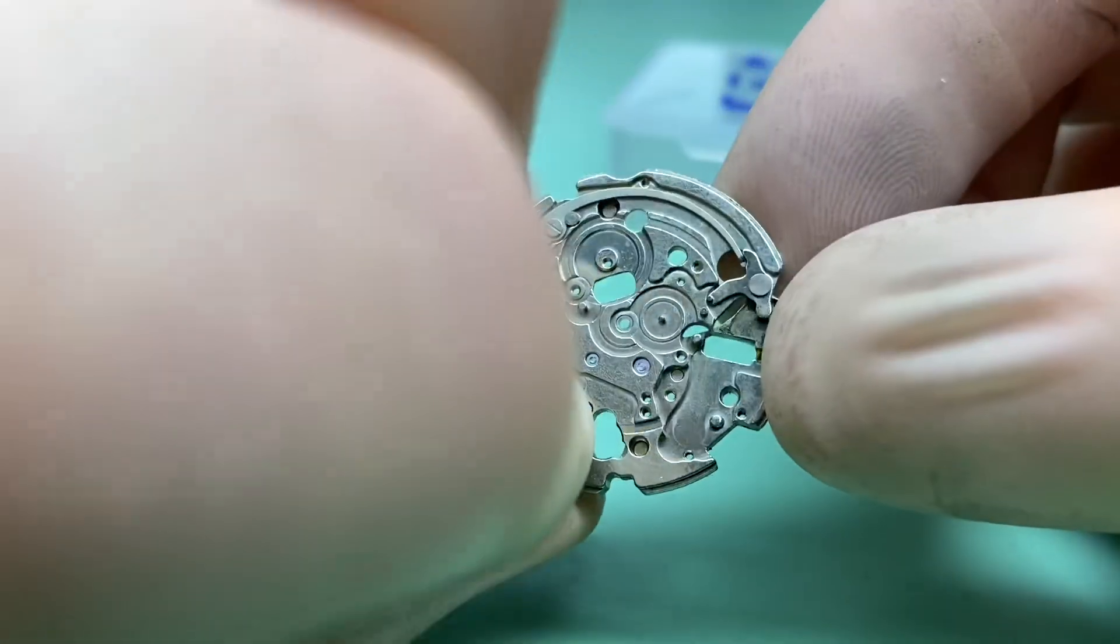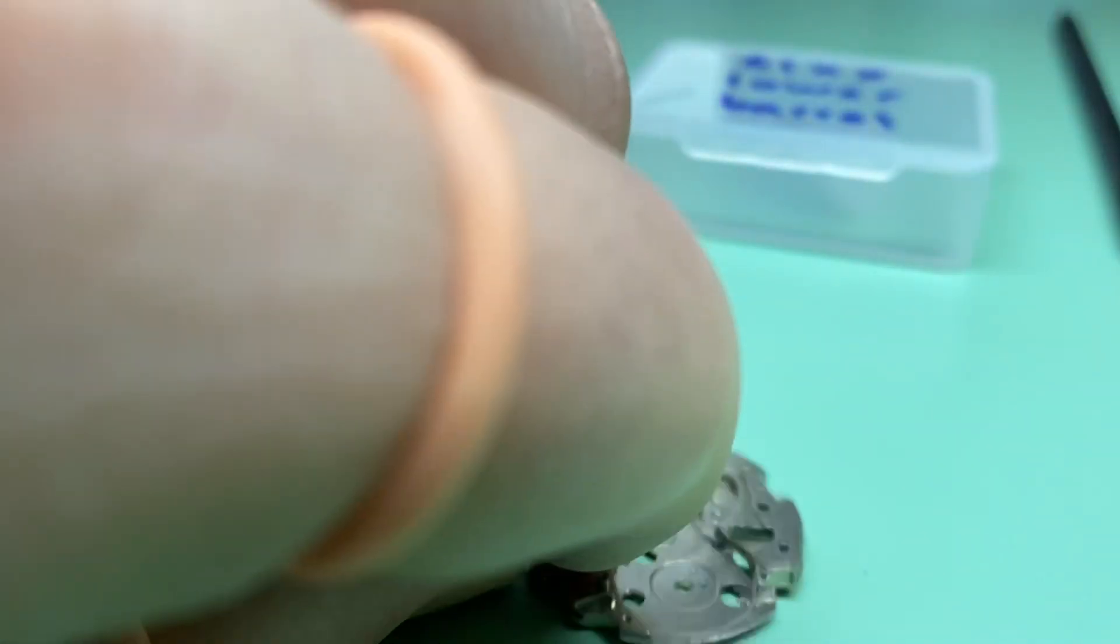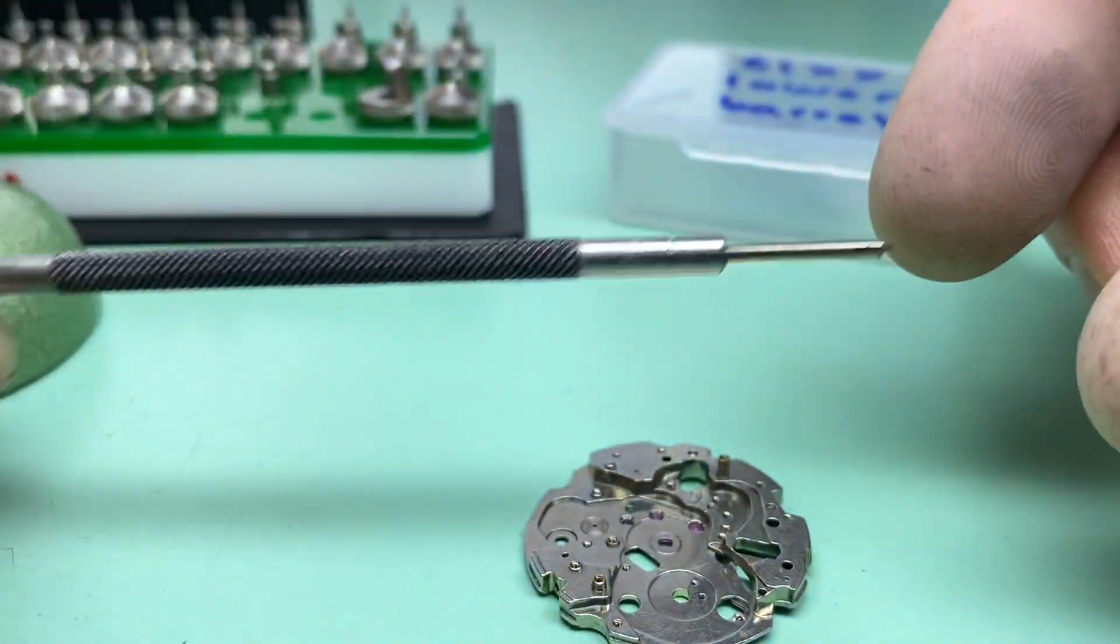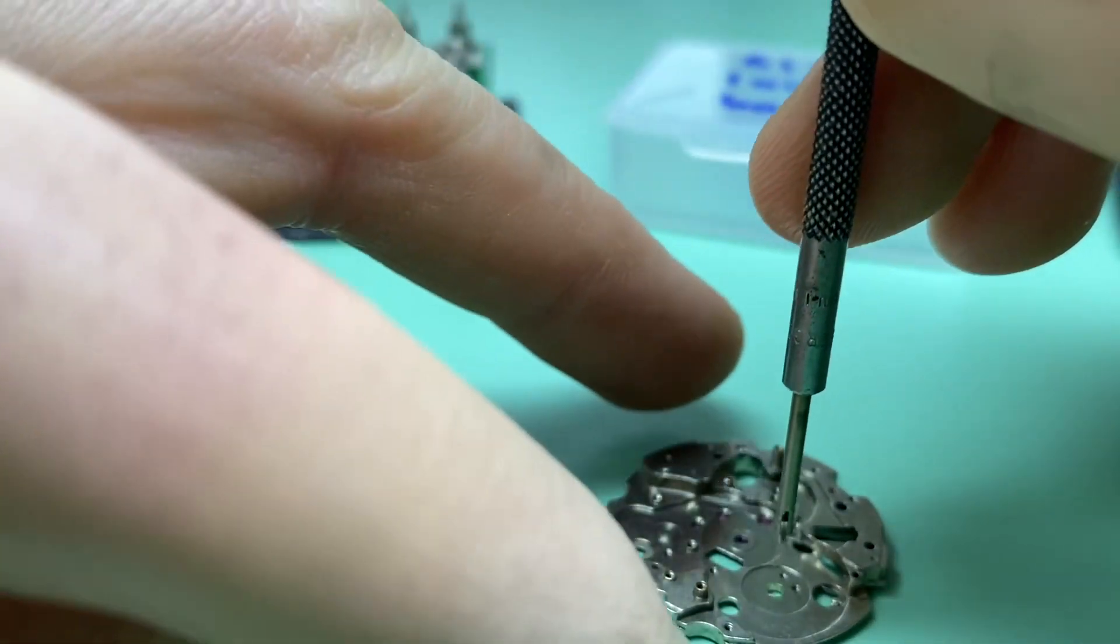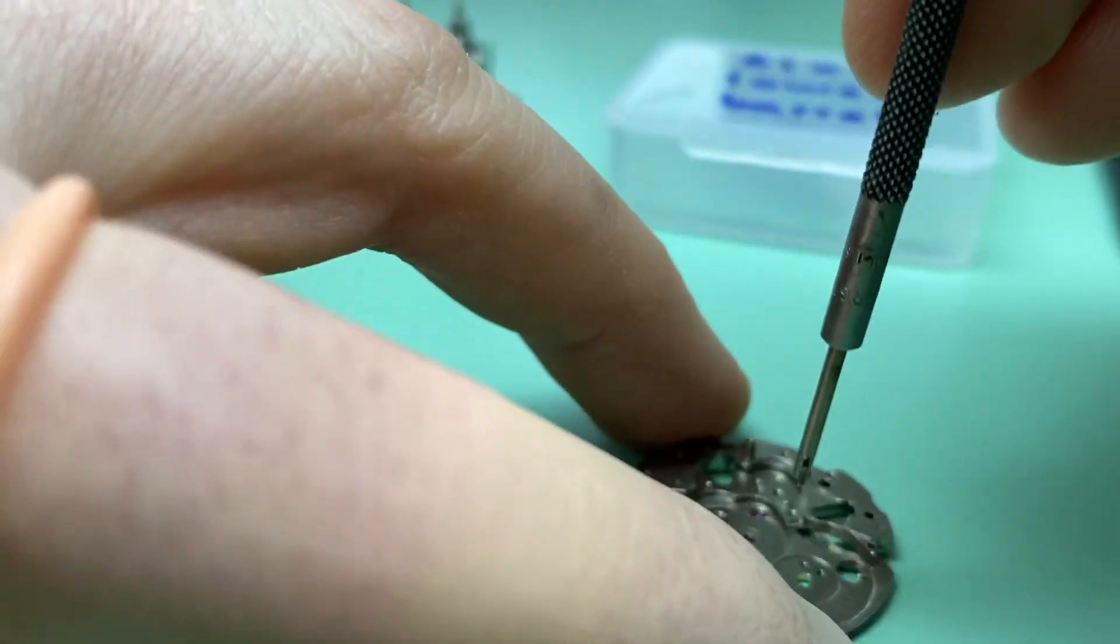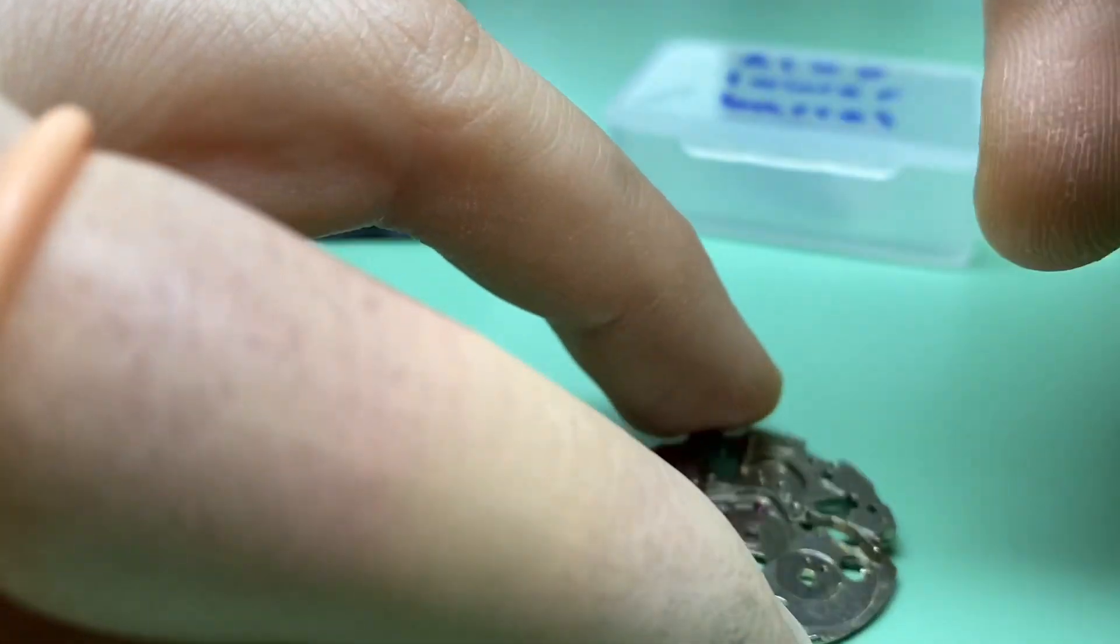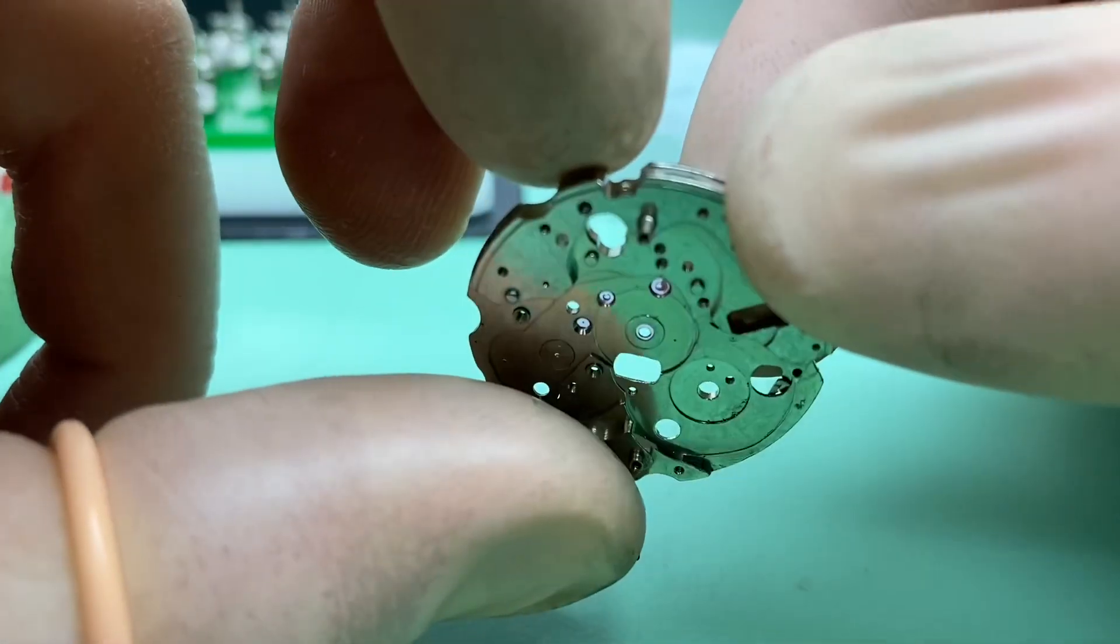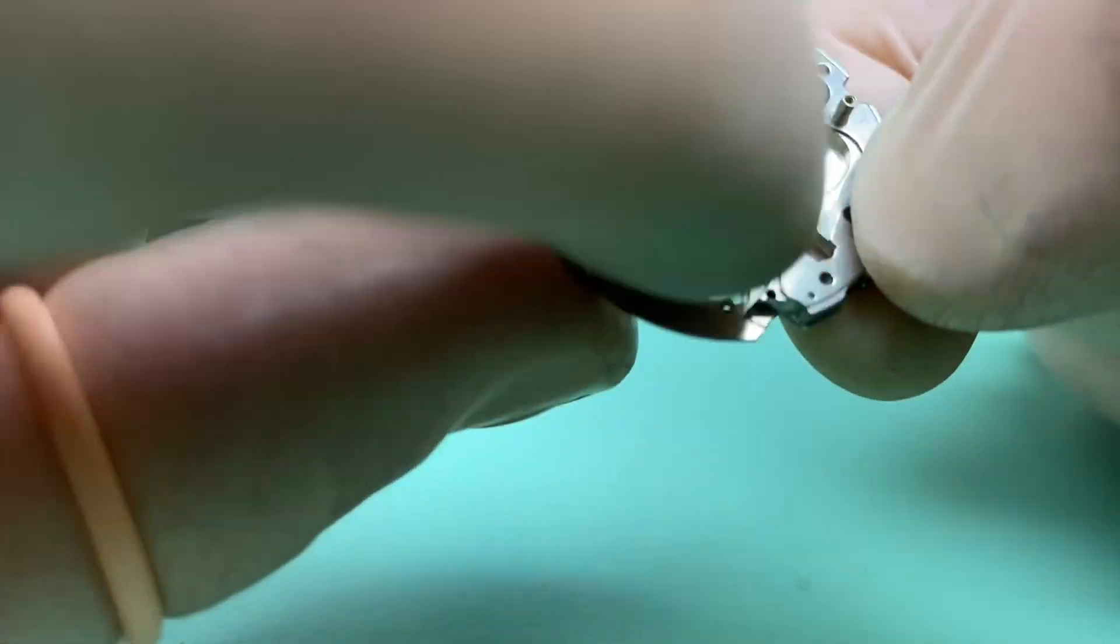So next we need to prepare the hole to receive the jewel. Now we do this by getting a small countersink cutter so that we can just trim off the excess and make a nice chamfer. So we just cut a small chamfer so that we knock the edge off where we've drilled it and create a nice chamfer.